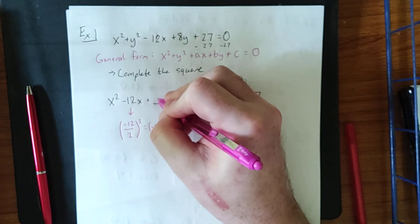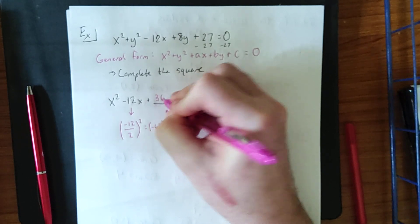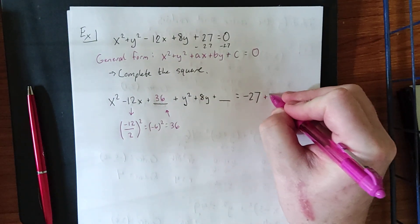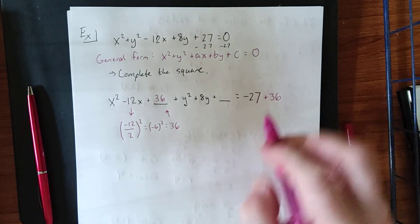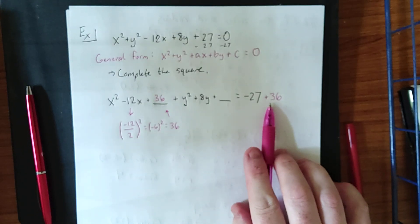When added to these two terms, this will create a perfect square trinomial. We balance this out by adding 36 to the right-hand side as well.